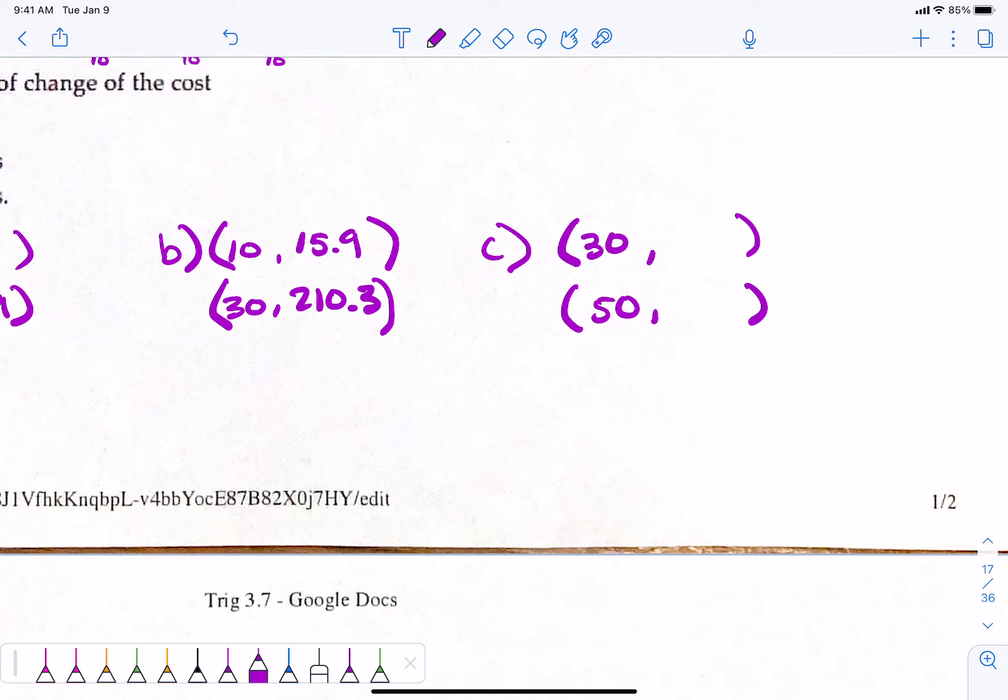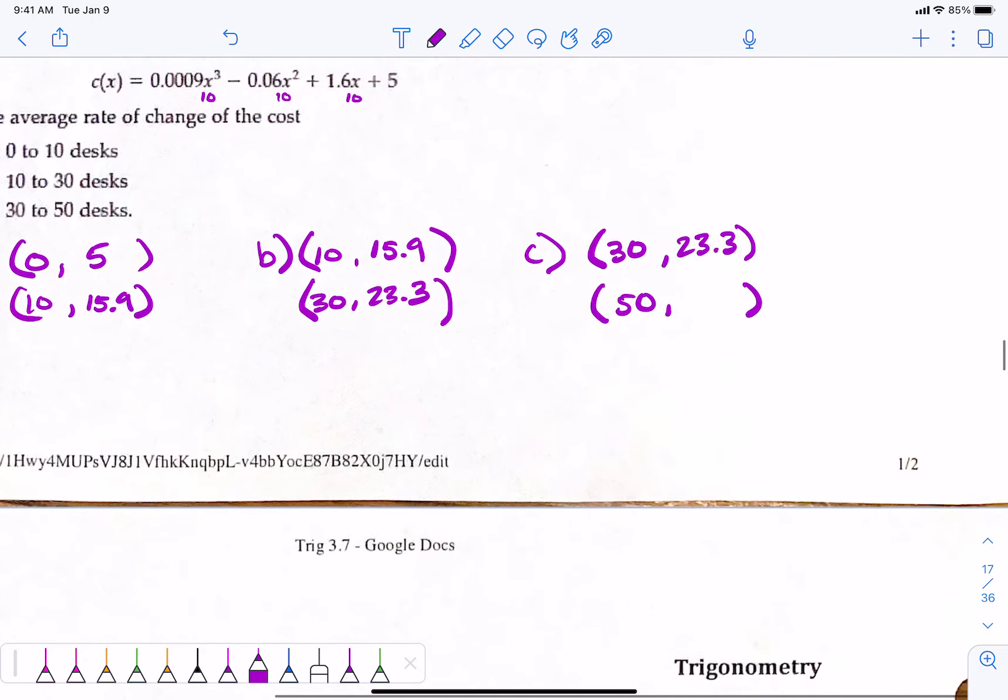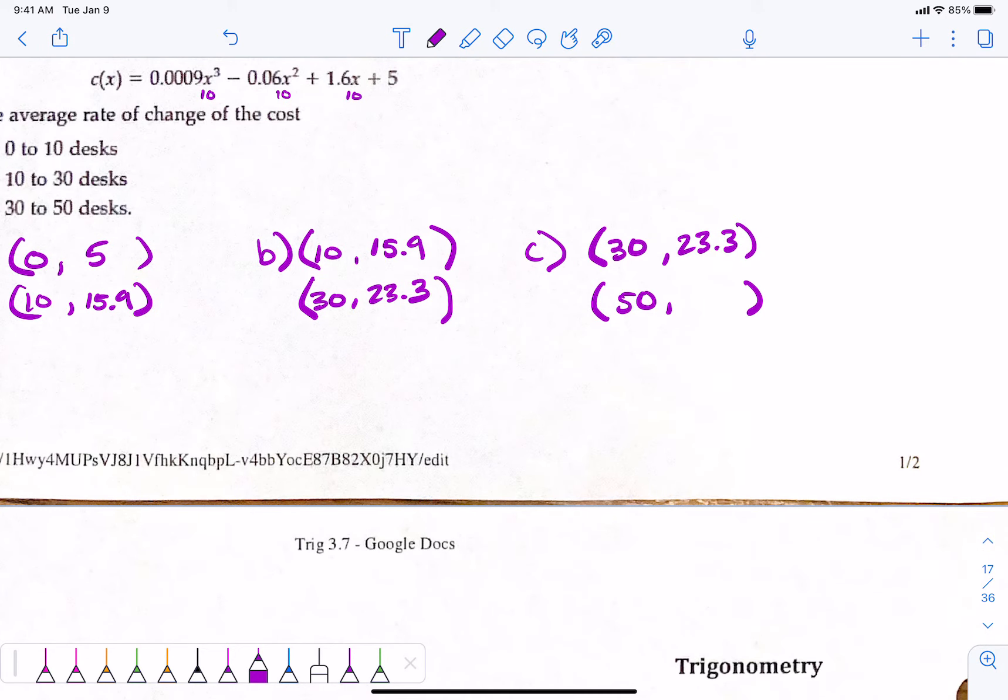23.3? 23.3. And 23.3 goes here and let's plug 50 in. 47.5. 47.5. Now we've got to get somebody to concur. 47.5.